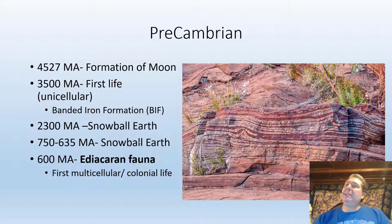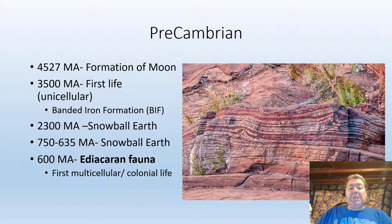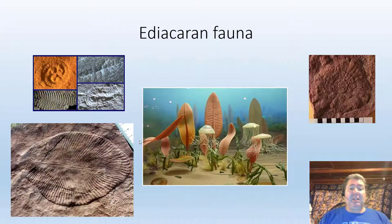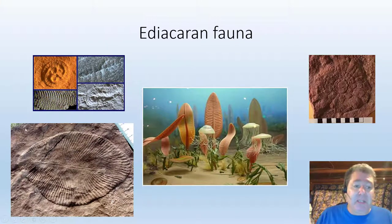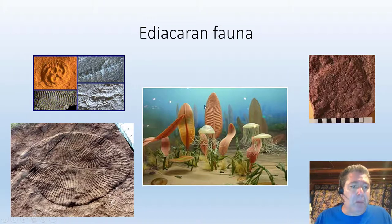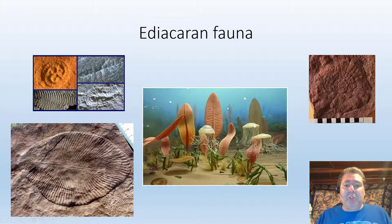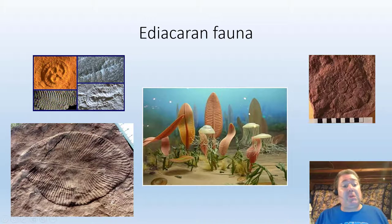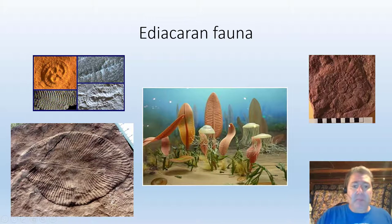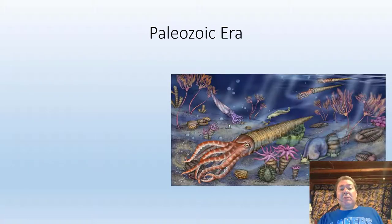About 600 million years ago we get the Ediacaran fauna — the first evidence of either multicellular or colonial life. This is about as exciting as it got: we have something that looks like a leaf, which is actually a filter-feeding animal, and little round blobs interpreted to be jellyfish. For the first four billion years of life on our planet, this is as exciting as it got.